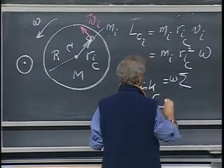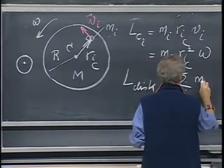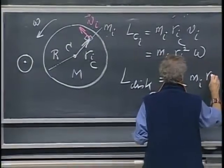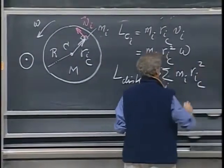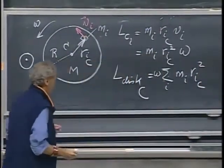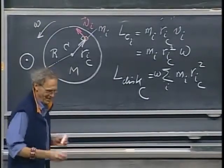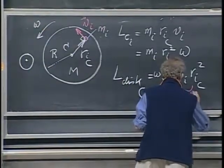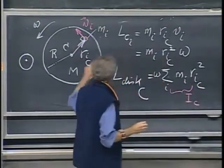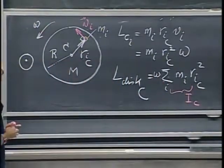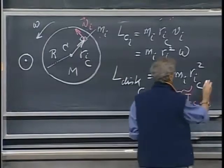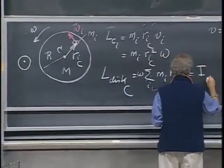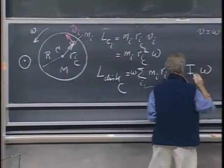I can bring the omega outside, and I would have, then, the summation of m_i r_i squared. And you see immediately, I hope that you see immediately, that this is the moment of inertia for a spin around the center of mass through that point C. And so I can write for this I_C times omega.